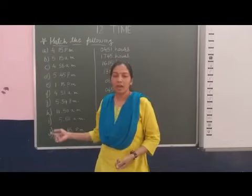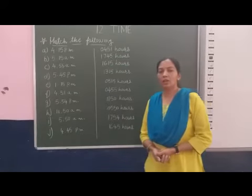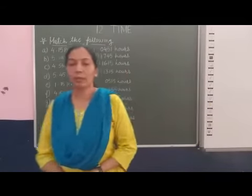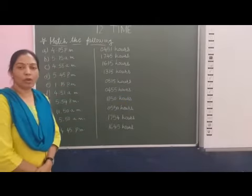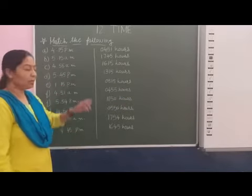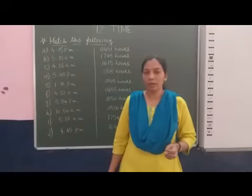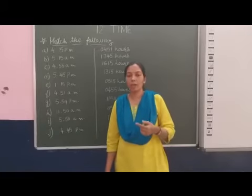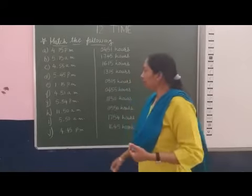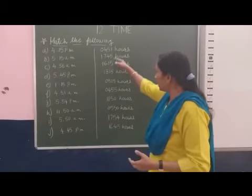Now students, here the time is given in 12-hour clock and another column for 24-hour clock. Now we will match this. Time is given 4 hours 15 minutes PM, post-meridian time. So when we convert into 24-hour clock, we add by 12 hours. So 12 plus 4 equals 16, 16 hours 15 minutes.